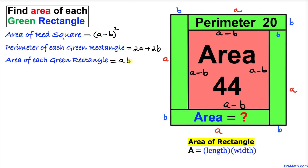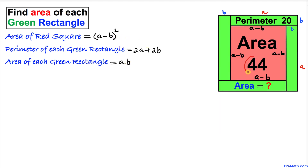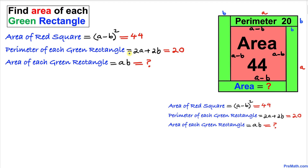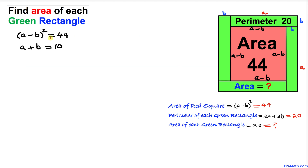We know that the area of this red square is 44, so (a minus b) squared equals 44. Moreover, the perimeter of each green rectangle is 20, so 2a plus 2b equals 20. Dividing through by 2, we get a plus b equals 10. We now have two equations: equation 1 is (a minus b) squared equals 44, and equation 2 is a plus b equals 10.